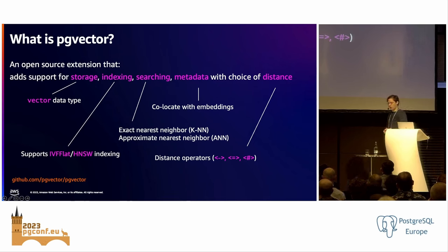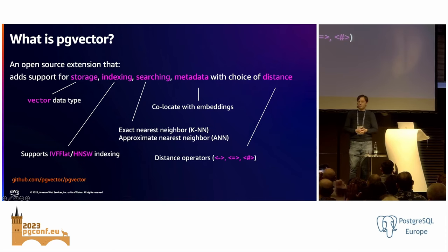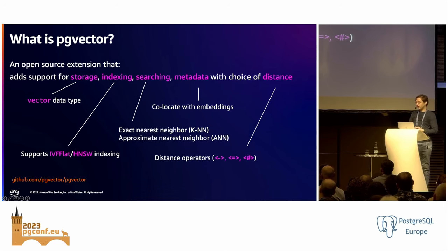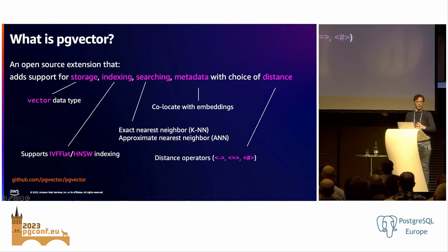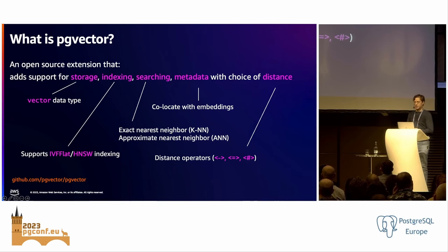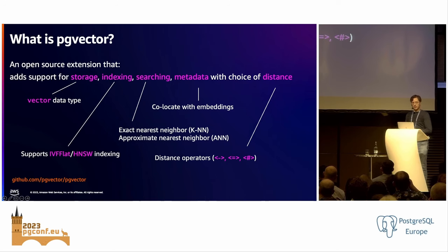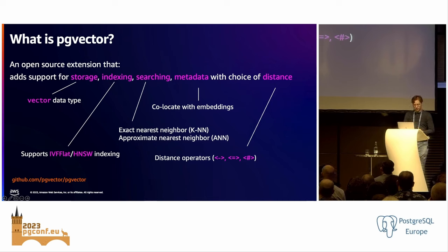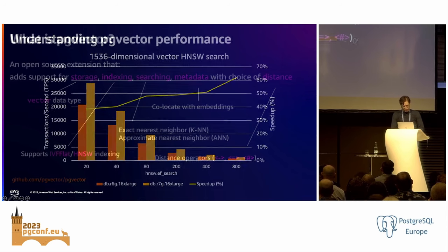Quick show of hands — how many folks are familiar with pgvector? How many folks are running pgvector? pgvector started in 2021 by a developer named Andrew Kane, who correctly anticipated there was going to be a surge of vector data coming towards databases. In the past year there's definitely been an acceleration in its development, particularly as we see the prevalence of machine learning systems. It adds a vector data type, a couple of indexing methods, and gives you a lot of choices in terms of how you query your vector data — whether you want exact nearest neighbor search with 100% recall, or approximate nearest neighbor with something like 90% recall.